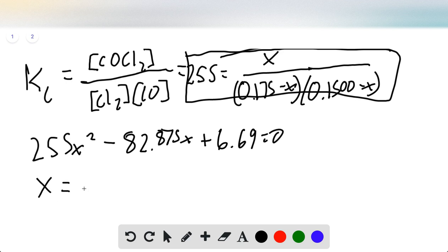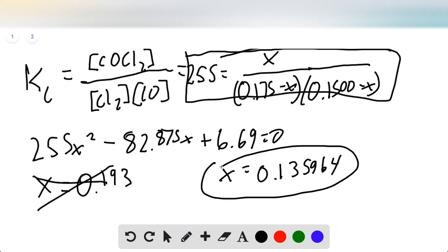However, this gives us two semi-reasonable values: one is 0.193 and one is 0.135964. I'm including all these sig figs for further calculations. We know it can't be the first value since our values of Cl2 and CO would be negative if this were X. It's not possible to have a negative concentration at equilibrium, so we know that 0.135964 is the correct X value.